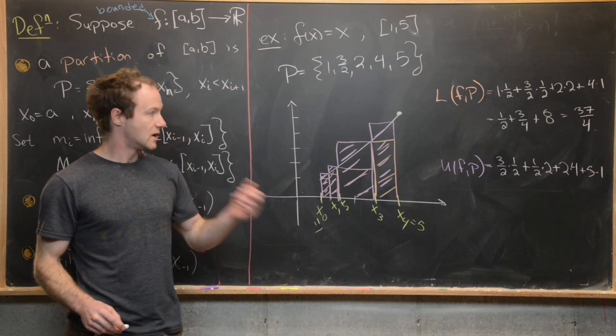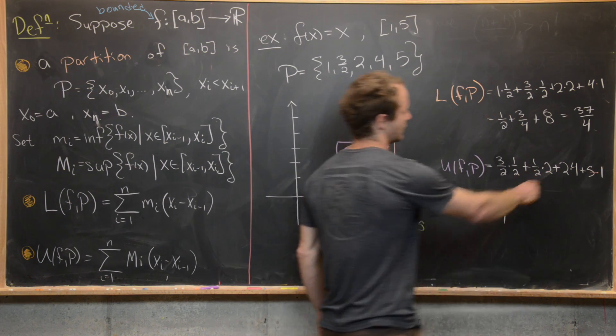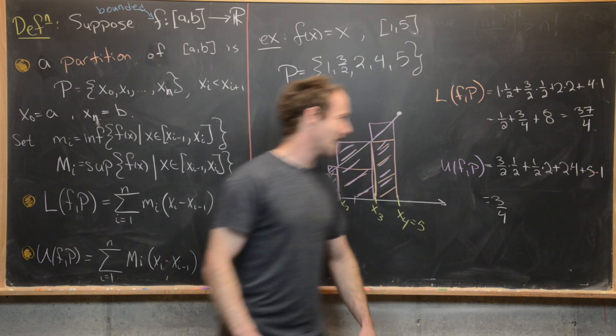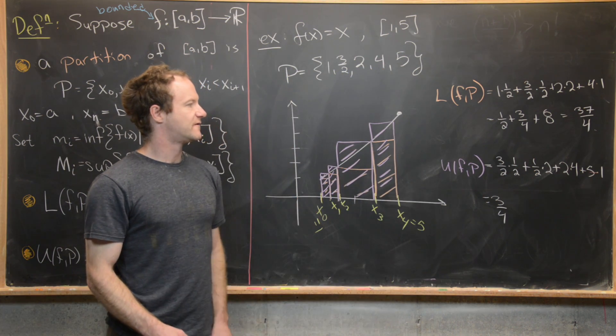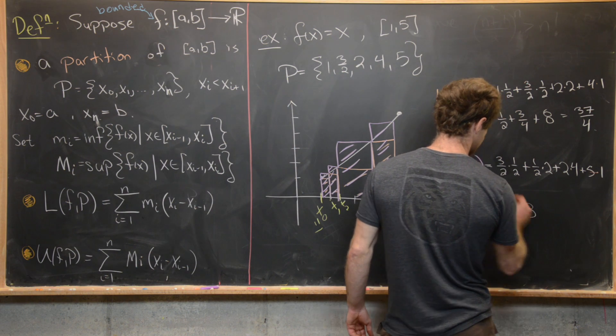So now we can add all of these together. So notice we're going to get 3/4. Then we've got 1/2 times 2. So that's 1 plus, this is going to be 8, plus 5, which is 13. So we've got 3/4 plus 13.